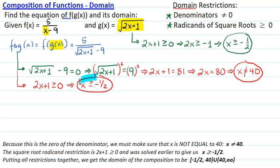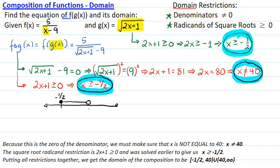Putting all the restrictions together, we are looking for values of x that are greater than or equal to -1/2, but they cannot equal 40. In interval notation, the domain is [-1/2, 40) union (40, ∞).